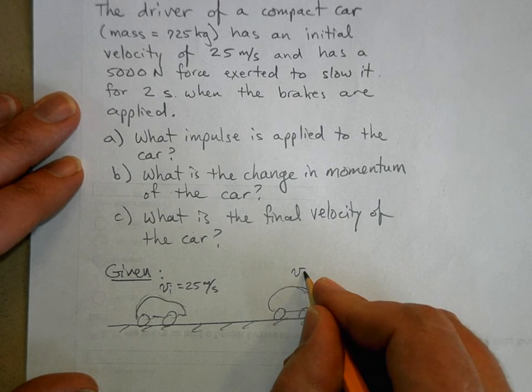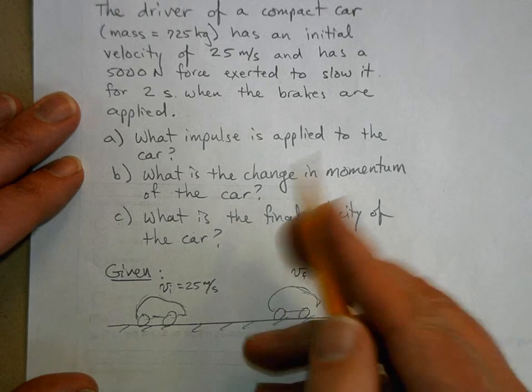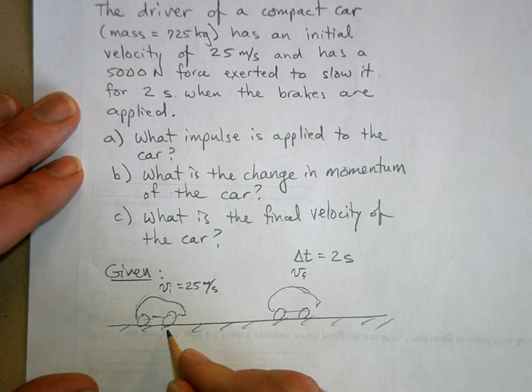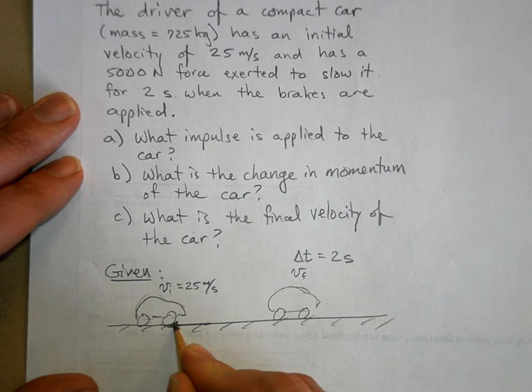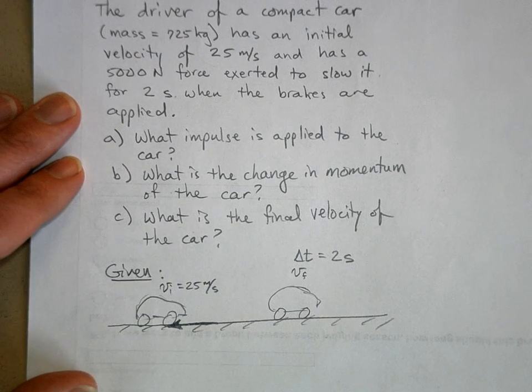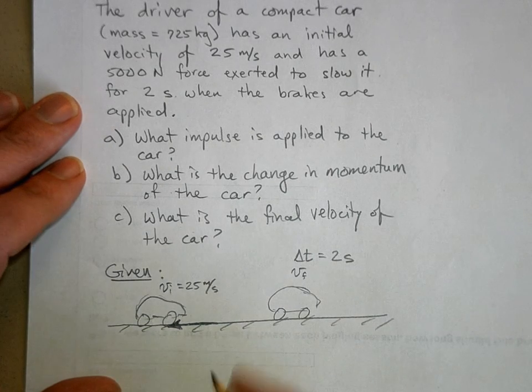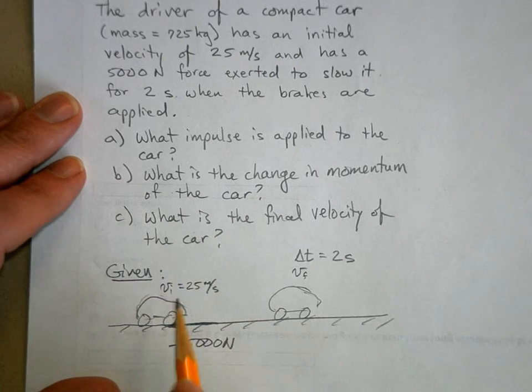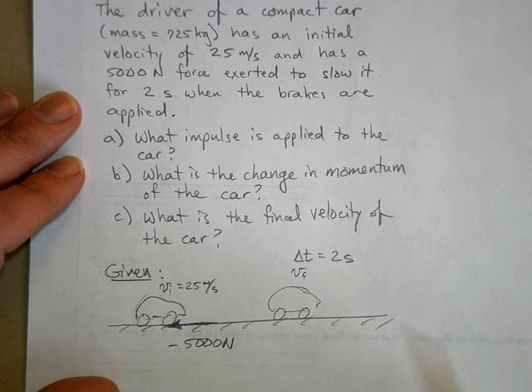And this final velocity happens two seconds later, so Delta T equals two seconds. And we've got this braking force which is really a friction force between your wheels and the road, and this is negative 5,000 newtons. Negative because it's in the opposite direction of the positive velocity.